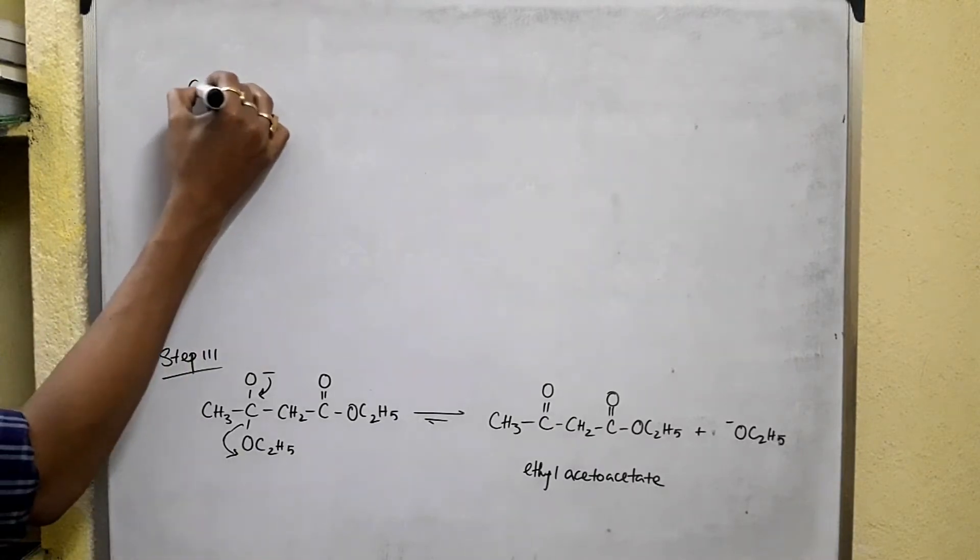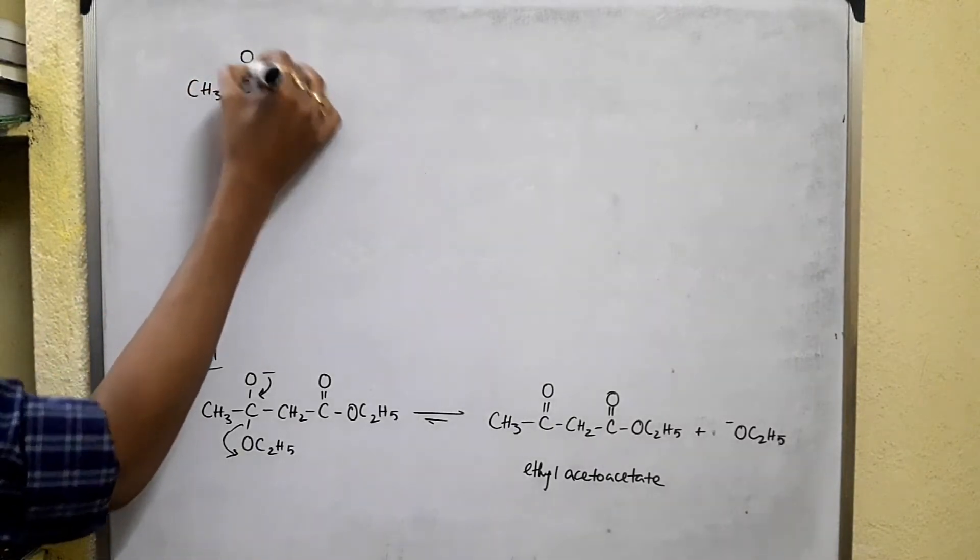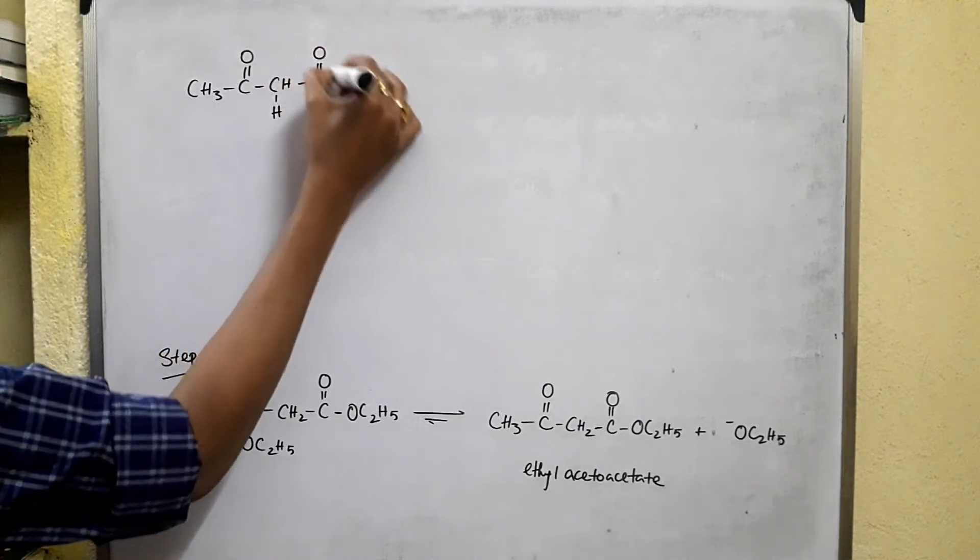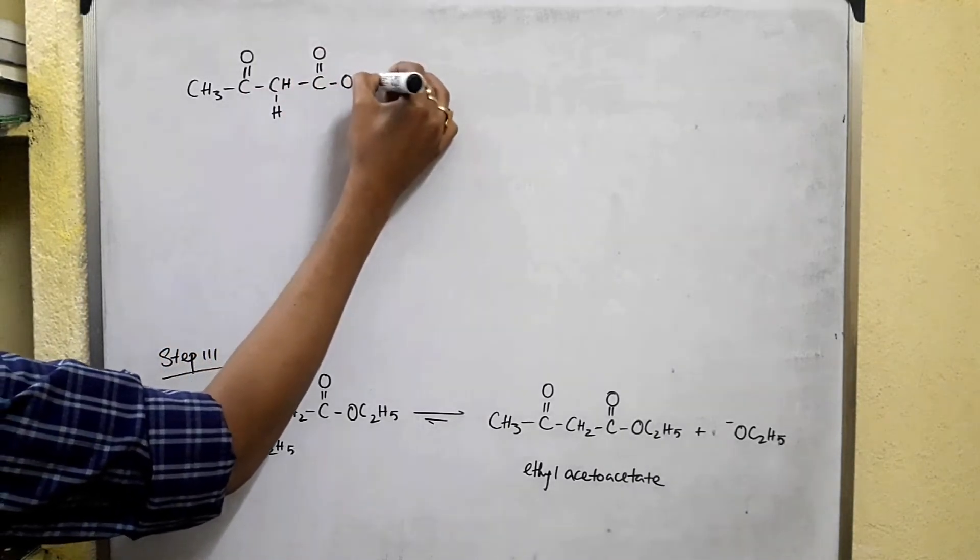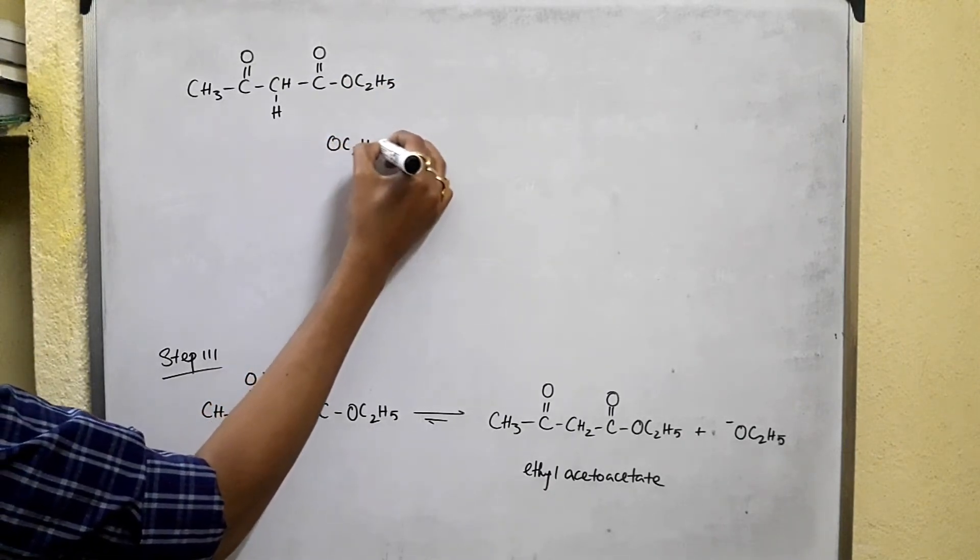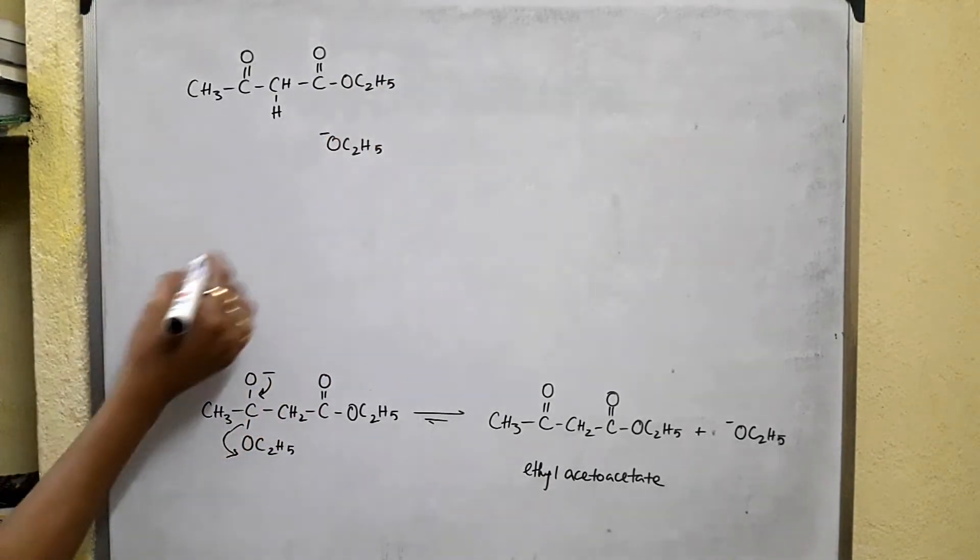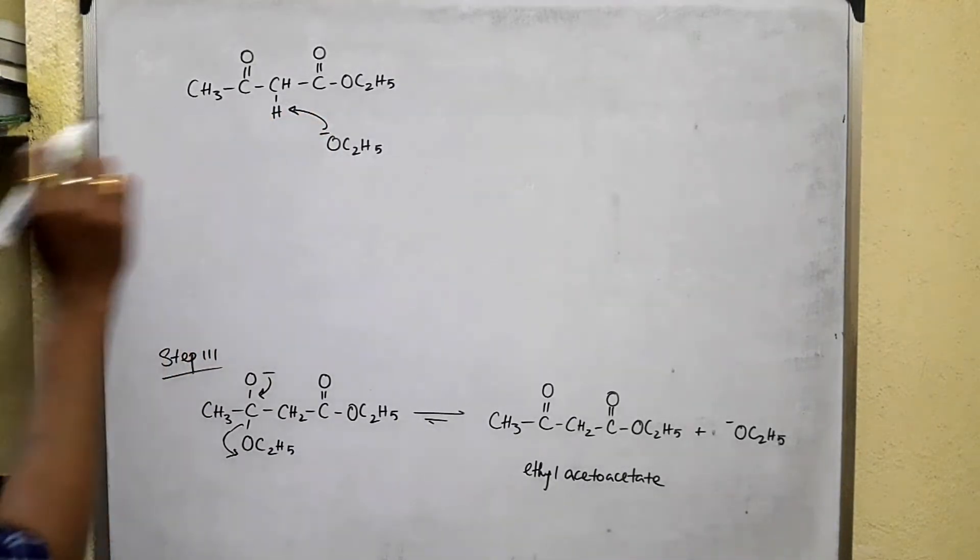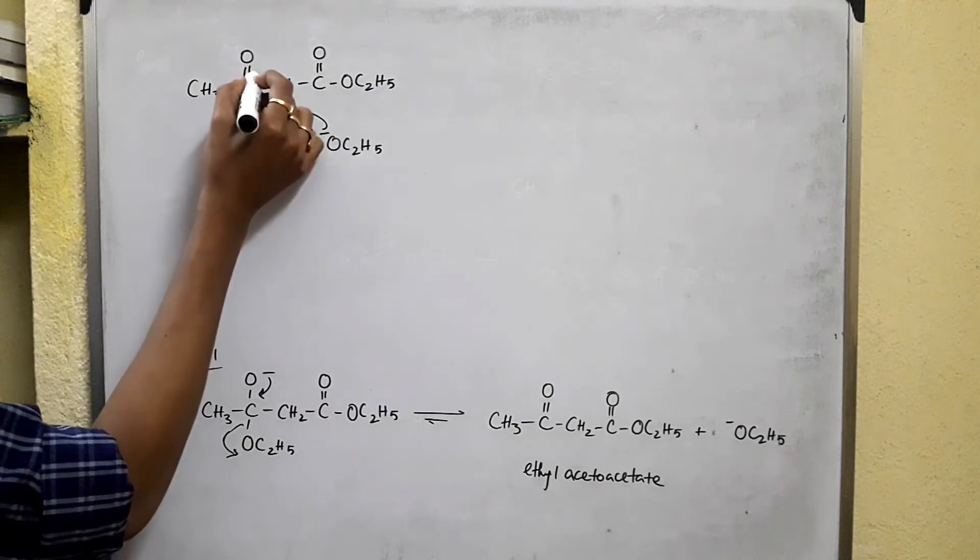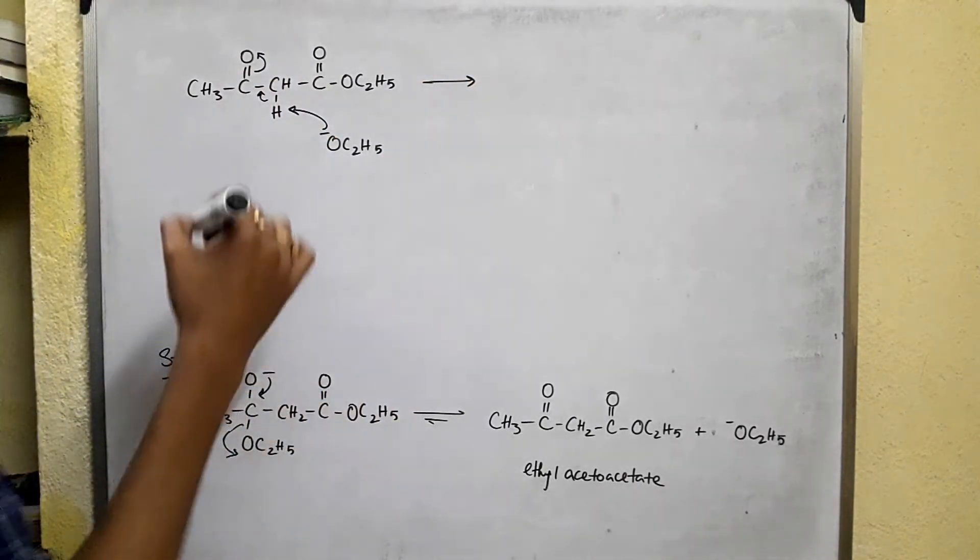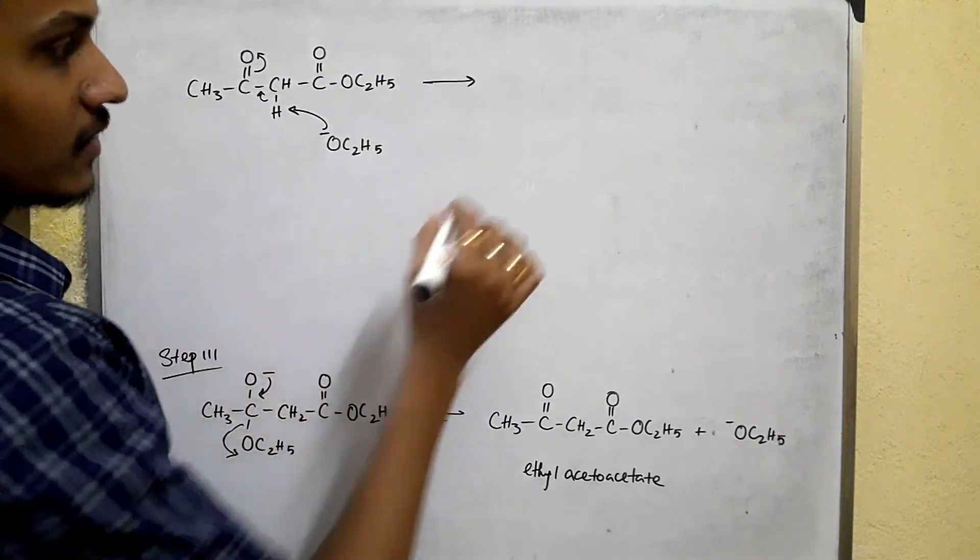So this is ethyl acetoacetate and this is the ethoxide. So ethoxide is going to remove the proton from ethyl acetoacetate. And we get a stable enolate ion.